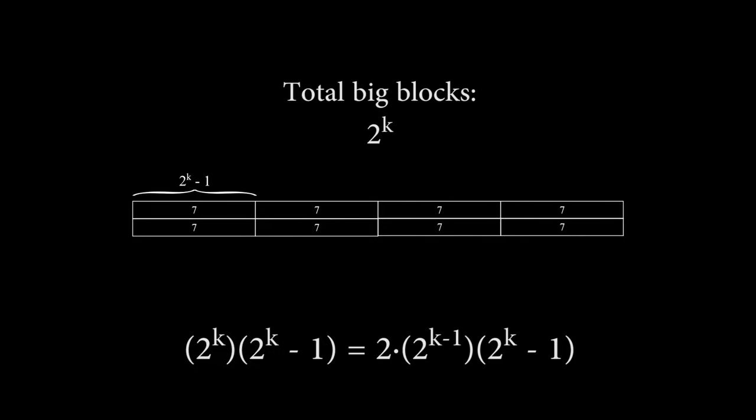And this is double our original number. That proves any number of this form must be perfect so long as 2 to the k minus 1 is prime.